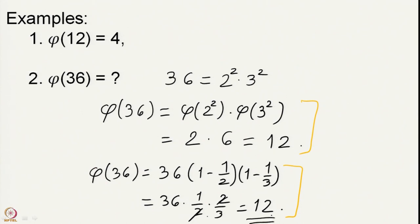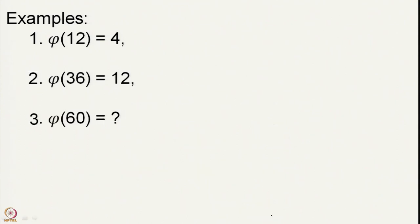What we have obtained is φ(36) = 12, and I hope you also got the same answer. Let us do one more problem: the Euler phi function of the number 60. I will give you one more minute to think about this problem and then we will see the solution.